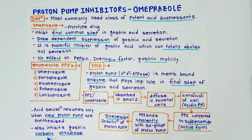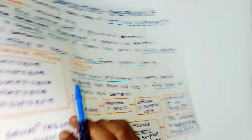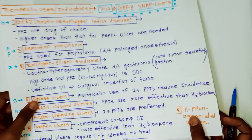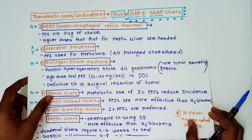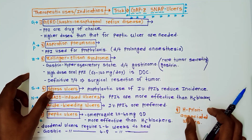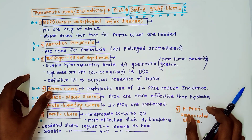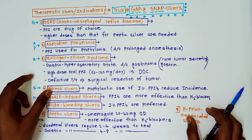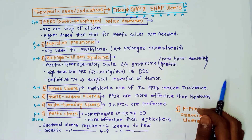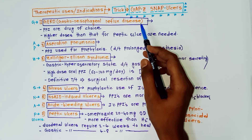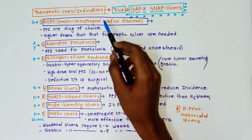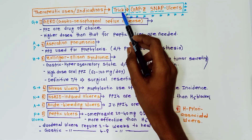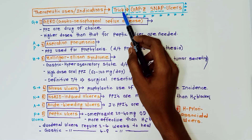It also inhibits the gastric carbonic anhydrase enzyme. Next, the therapeutic uses or indications of proton pump inhibitors, which will also be asked in exams. The trick to remember the therapeutic uses is the mnemonic 'GAP Z SNAP ulcers.'